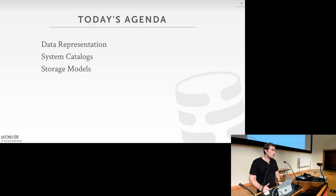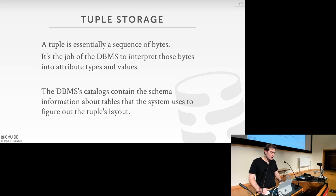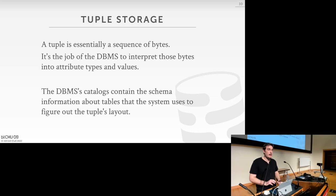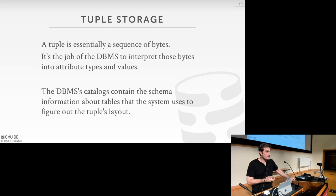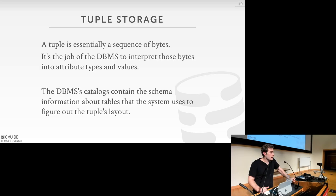Finally, we'll wrap up talking about high-level storage model alternatives. At a high level, a tuple is essentially just a sequence of bytes — a series of bytes stored inside a page. The various pieces of the storage manager tell us how to extract individual data values from that sequence of bytes. The catalog contains the high-level schema — information about tables — that tells us exactly how the bytes are laid out inside a tuple.